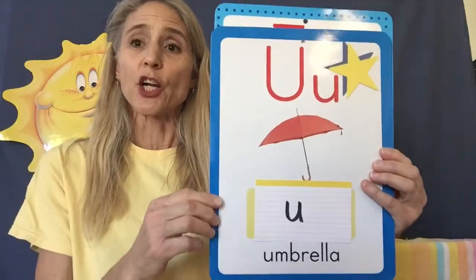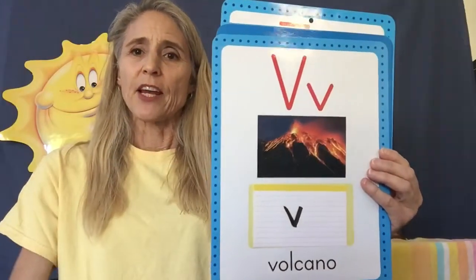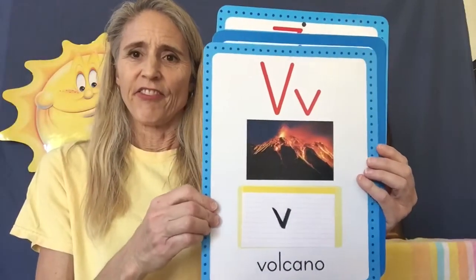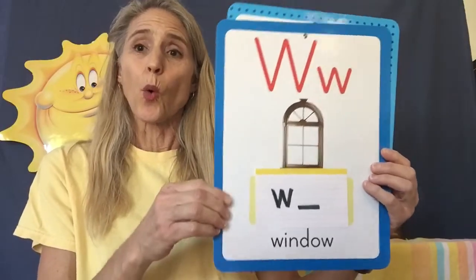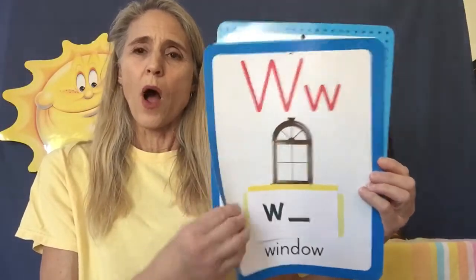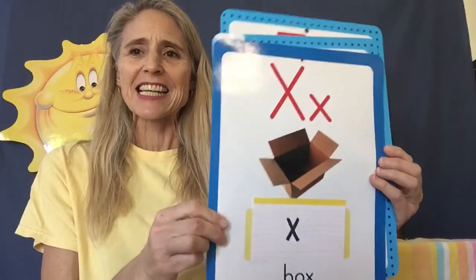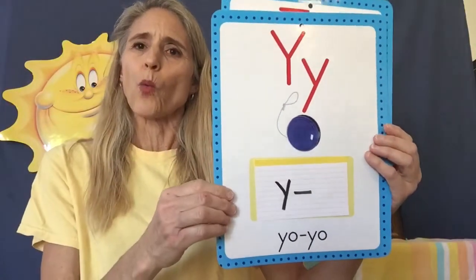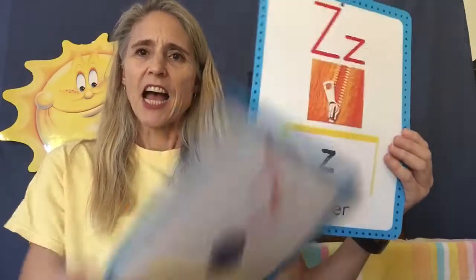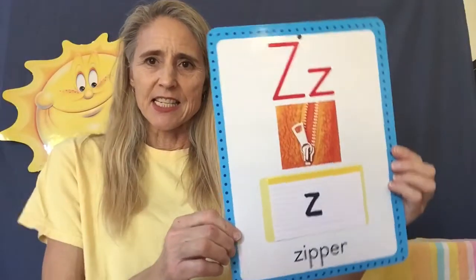Umbrella card U — uh, uh, uh. Volcano card V — v, v, v. Window card W — w, w, w. Box card X — x, x, x. Yo-yo card Y — y, y, y. And zipper card Z — z, z, z. Excellent!